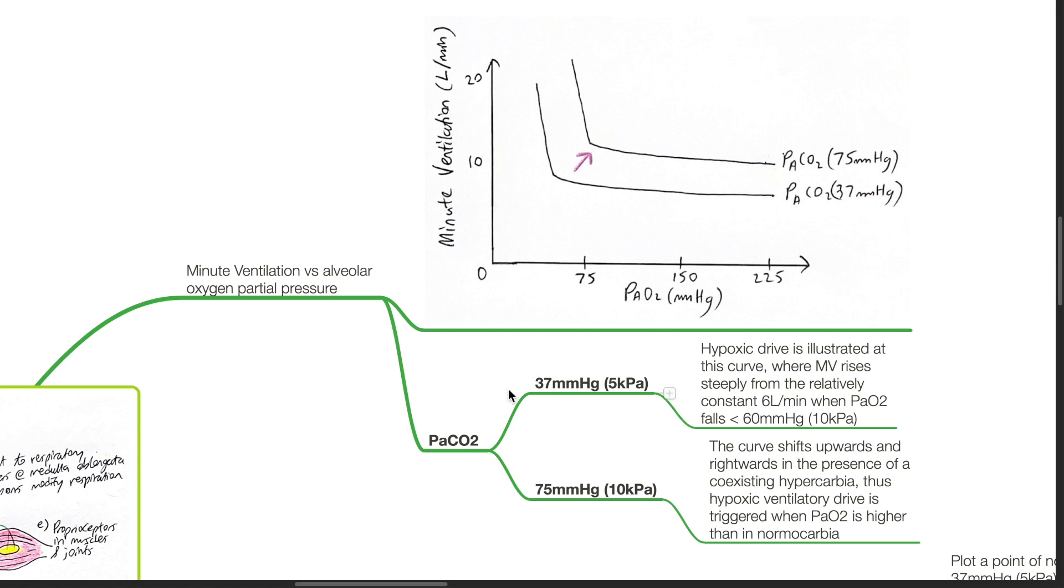The second curve, at a PaCO2 of 75 mmHg, the curve shifts upwards and rightwards in the presence of coexisting hypercarbia. Thus, the hypoxic ventilatory drive is triggered when PaO2 is higher than that in normocarbia.